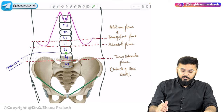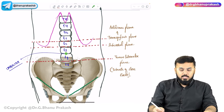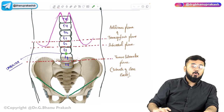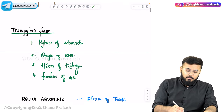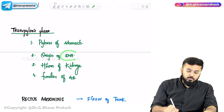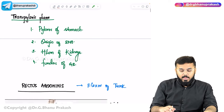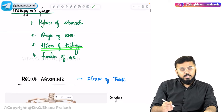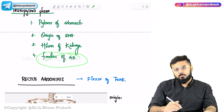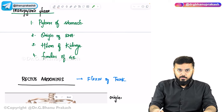Within the transpyloric plane, the structures present include: the pylorus of the stomach, the superior mesenteric artery originating from this plane, the hilum of the kidneys, and the fundus of the gallbladder. These are the key structures at the transpyloric plane that you need to remember.